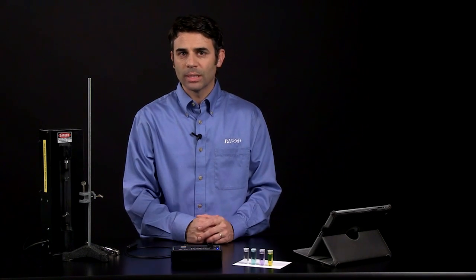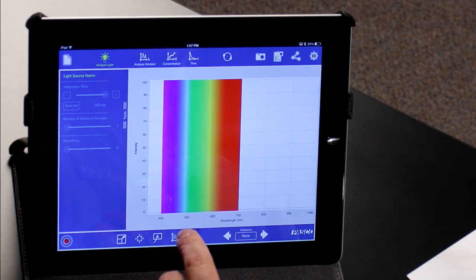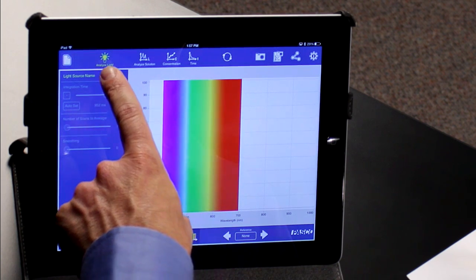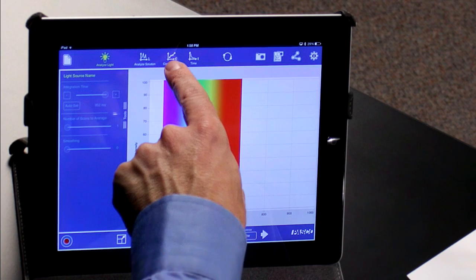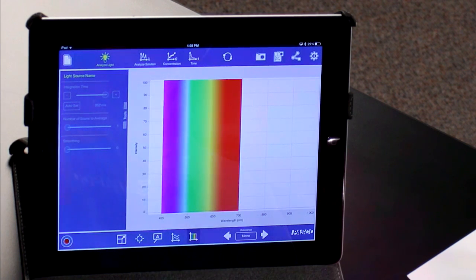So let's dive in and see how we can use the spectrometer. If you look at the spectrometry software, you can analyze lights, you can analyze solutions, and you can do concentration and time analysis studies.